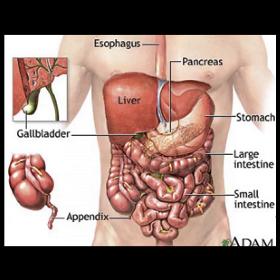Let's take a closer look at what a sonographer might encounter when a provider orders an abdominal ultrasound. When scanning the abdomen, the sonographer will take images of the liver, gallbladder, pancreas, kidneys, spleen, and the great vessels. By using clues from the patient history, the sonographer will have a better idea which organs will need extra close attention.